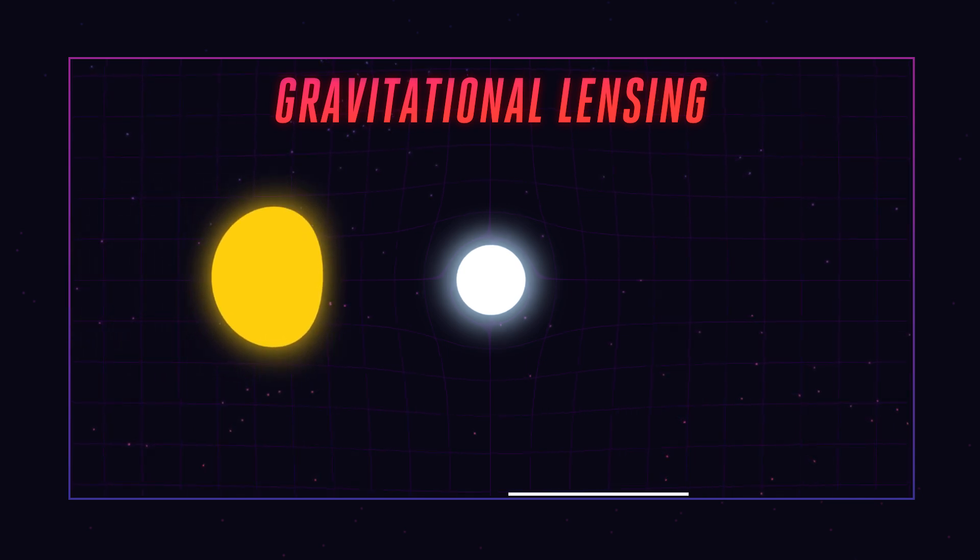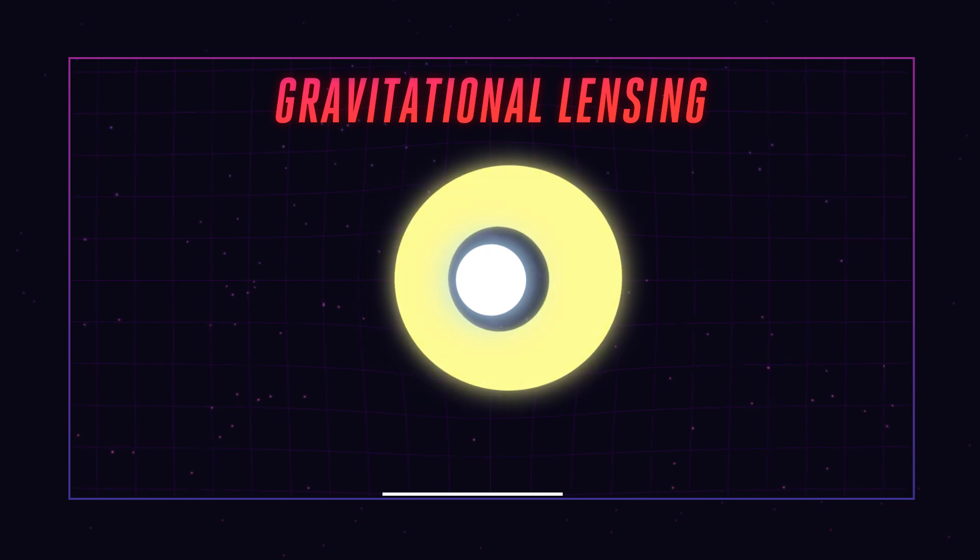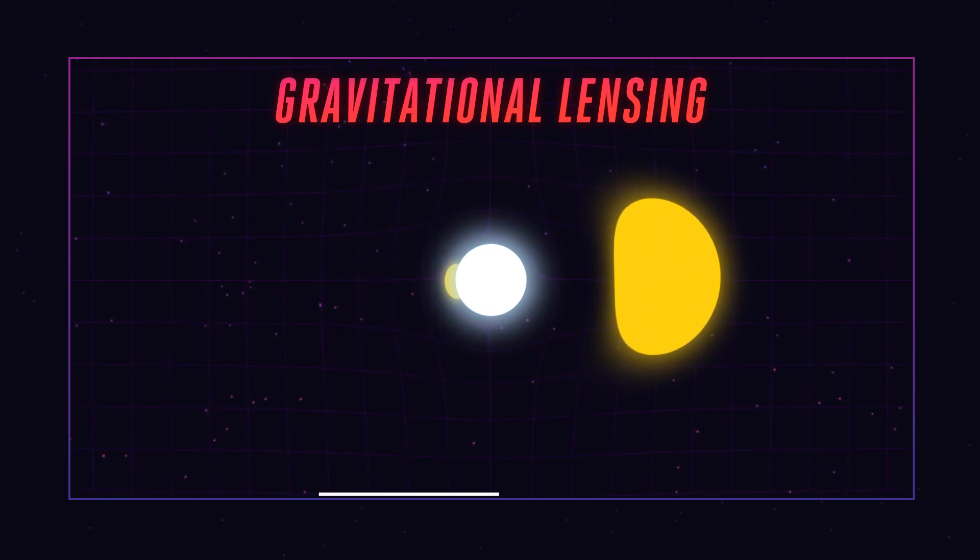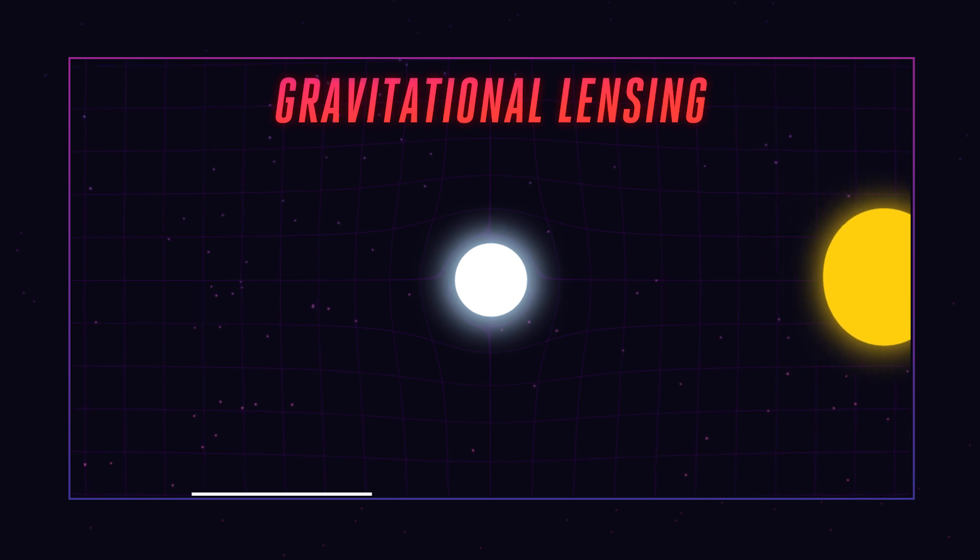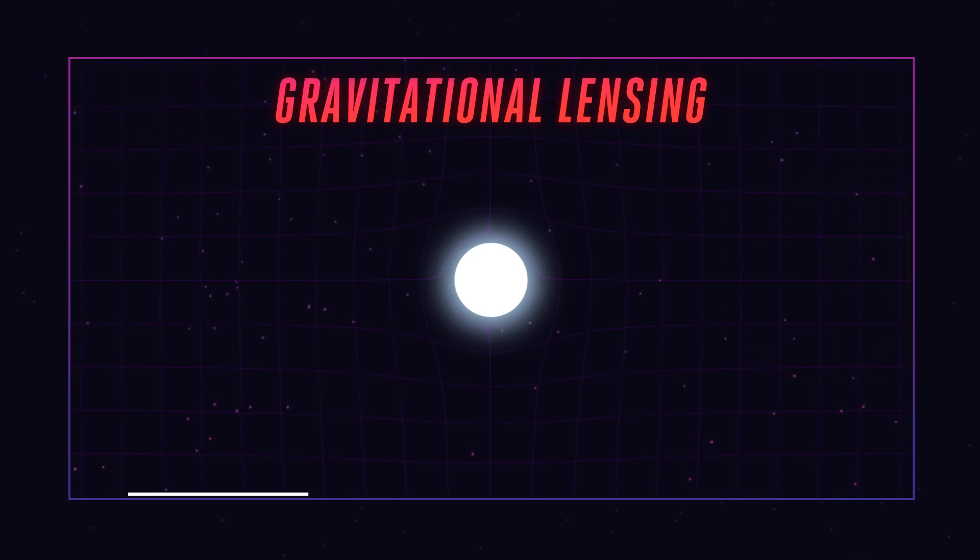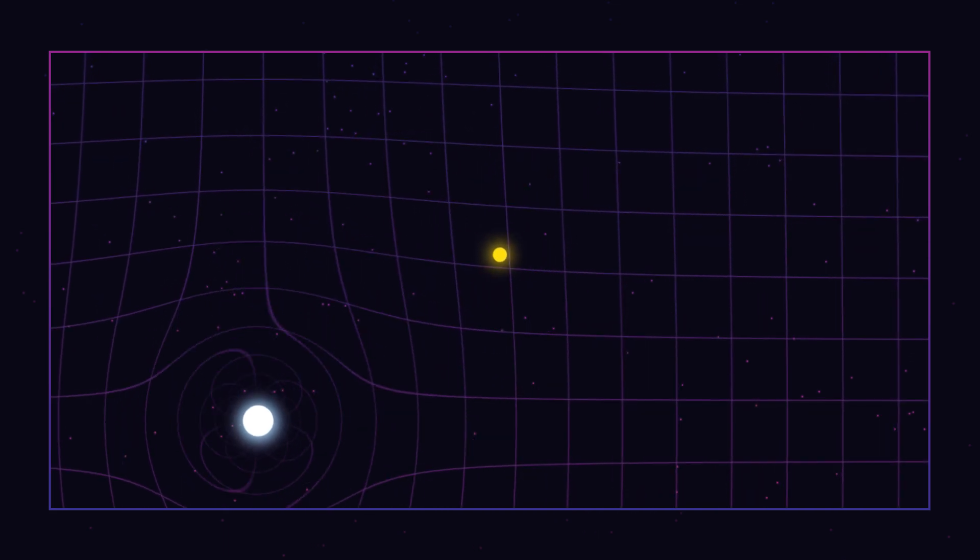In fact, Einstein predicted that when two stars align, the background star would appear as a bright ring around the star in front. We haven't seen this perfect ring from two stars outside our solar system, but this discovery is the closest thing we've ever observed. The stars weren't perfectly aligned, so we saw this weird shift in position instead.